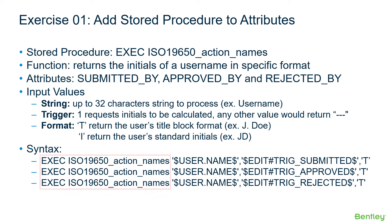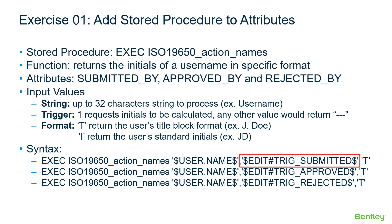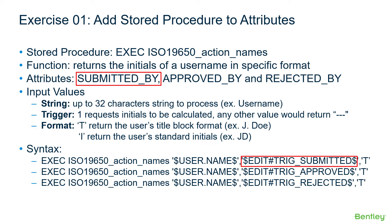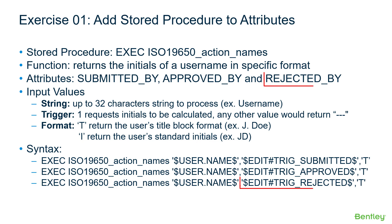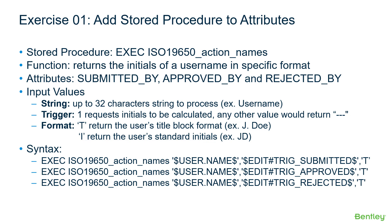The syntax we'll use for the three attributes is EXEC, the name of the procedure, then the system variable user.name as the first value, the TRIG_submitted attribute value as the second, and T as the third value requesting the title block format. All three attribute execute commands will be the same except for the triggered attribute name. For Submitted By, the trigger attribute is TRIG_submitted; for Approved By it is TRIG_approved; and for Rejected By it is TRIG_rejected.